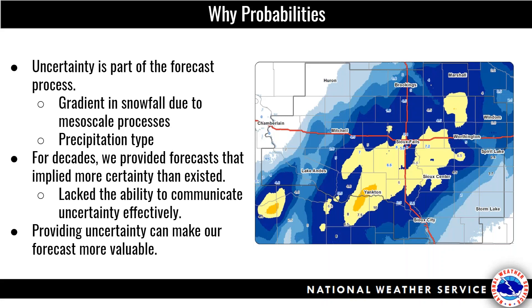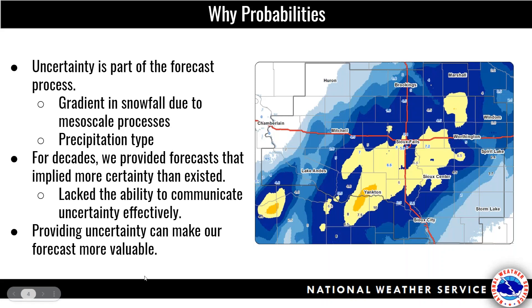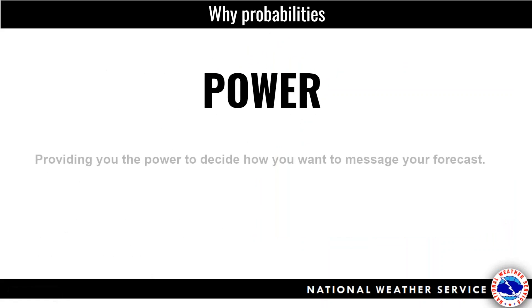Given all this uncertainty that we know exists, we need to communicate that to partners. But for decades, all we had was basically deterministic forecasts of snowfall, and that really hamstrung us — it made us talk about snowfall in a much more deterministic way than actually existed. There were times in our office that we would almost have to talk around our snowfall graphic because we knew the uncertainty existed yet we were showing a single amount like five inches in Sioux City, Iowa. Providing uncertainty can make our forecast more valuable — research by Julie Demuth and Susan Joslin has shown that partners and the public get more value from our forecast when we can talk about uncertainty in a way they understand.